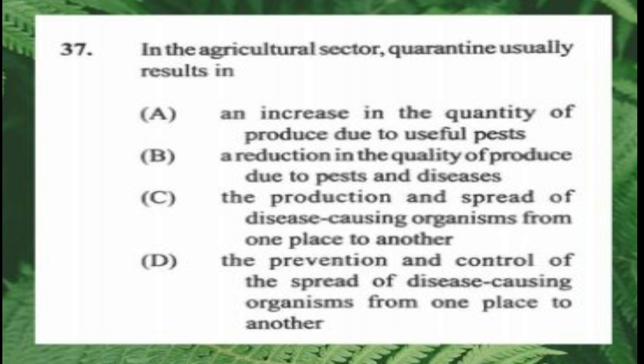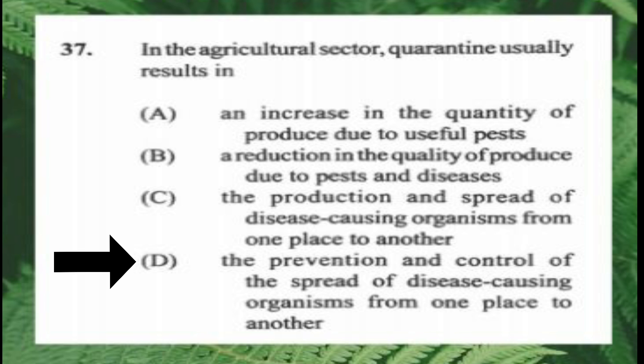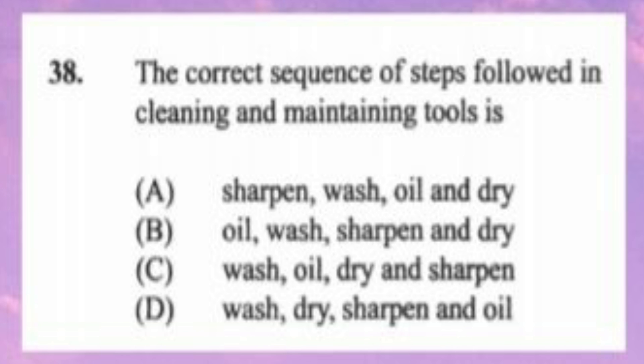Question number thirty-seven: in the agricultural sector, quarantine usually results in A) an increase in quantity of produce due to useful pests, B) a reduction in quality of produce due to pests and diseases, C) the production and spread of disease-causing organisms, D) the prevention and control of the spread of disease-causing organisms. The answer is D, the prevention and control of the spread of disease-causing organisms.